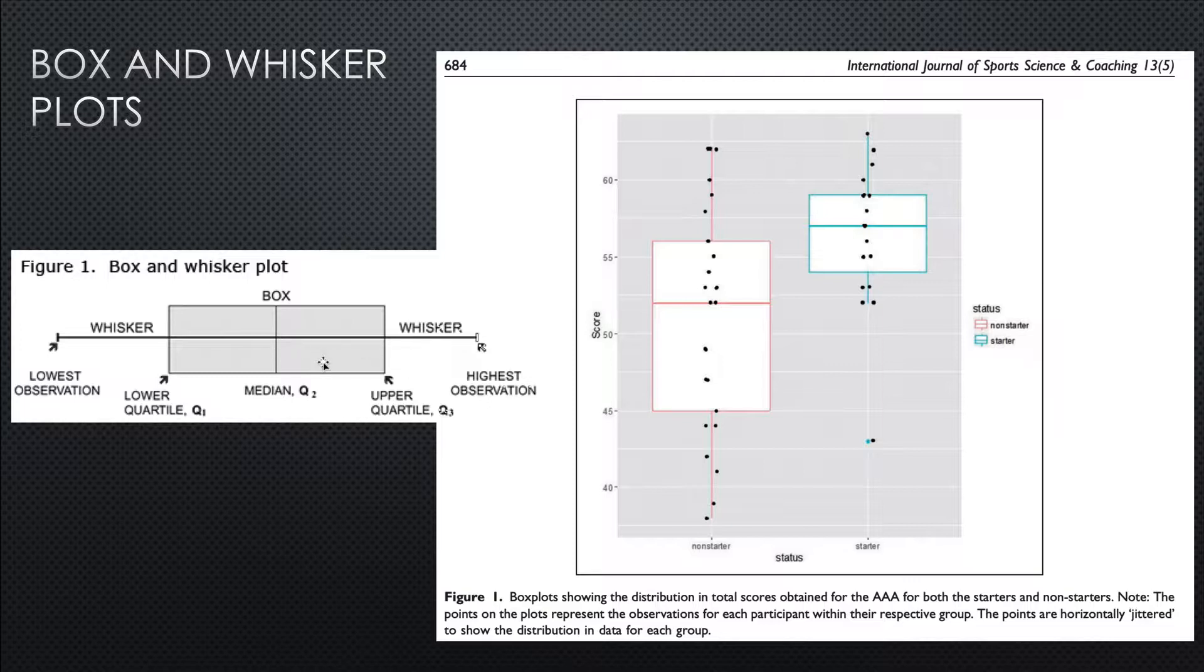So that's what that box and whisker shows us. So what does this show us? Let's make it practical. This study is kind of interesting. What they were trying to do was create a way to predict how good an Australian rules football player is based on a number of tests.